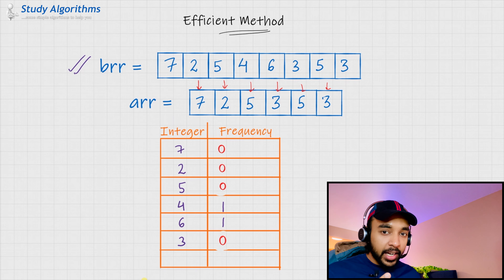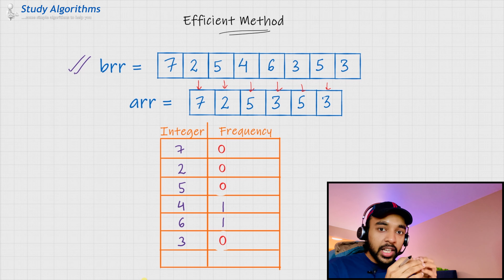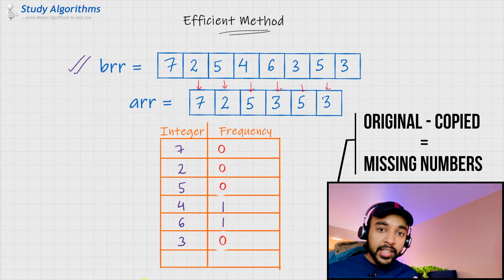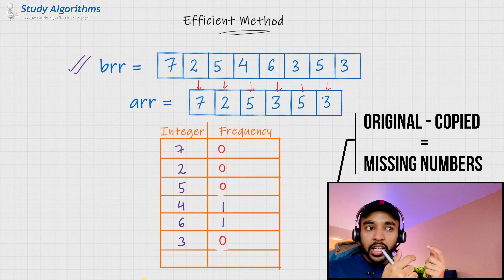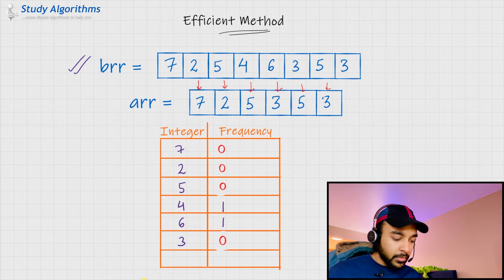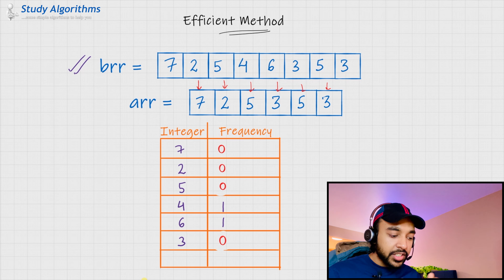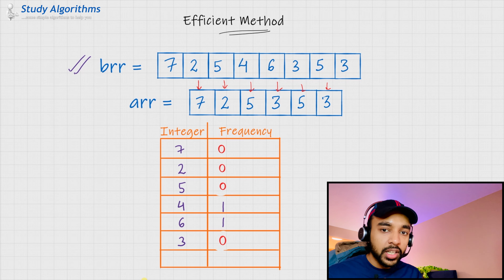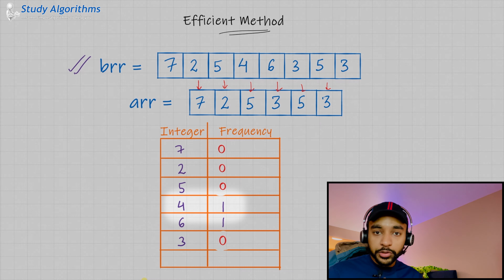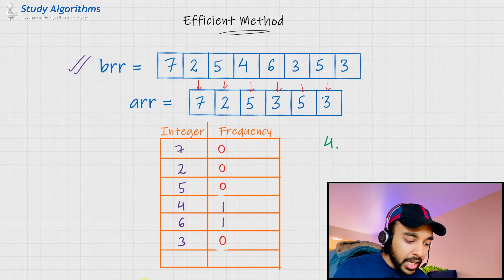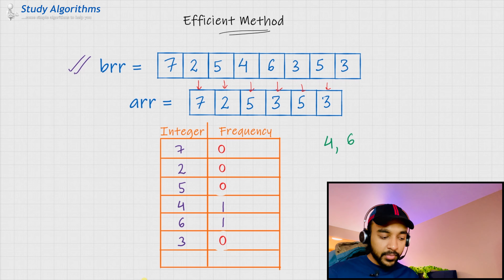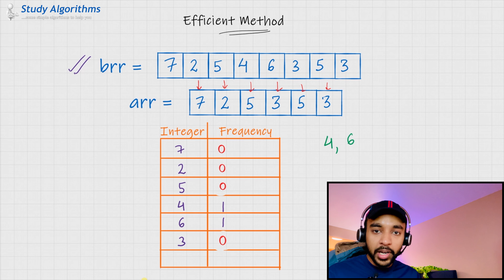You get the idea. What we did is: we created a frequency map using our original array, and then we removed all the elements that the artist copied. This should give you all the missing numbers. As a last step, just scan through the entire map and copy down all the numbers whose frequency is still greater than zero. You see 4 for one time and then you see 6 — and hence this should be your answer.